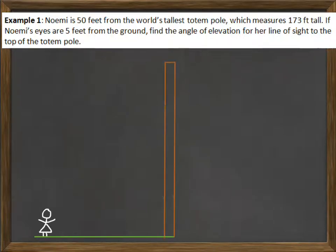So here's our friend Noemi and she's looking at the tallest totem pole. I'm going to draw her line of sight to the top of the totem pole because the angle of elevation is compared to her line of sight. Also, it's compared to a horizontal line. So I need to draw in a horizontal line as if she was looking straight ahead. Her angle of elevation is right there in between the two, in between the horizontal line and her line of sight.